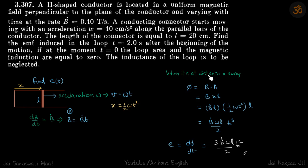Now when it's at a distance X away, the flux through it is BA, where A is X times L.